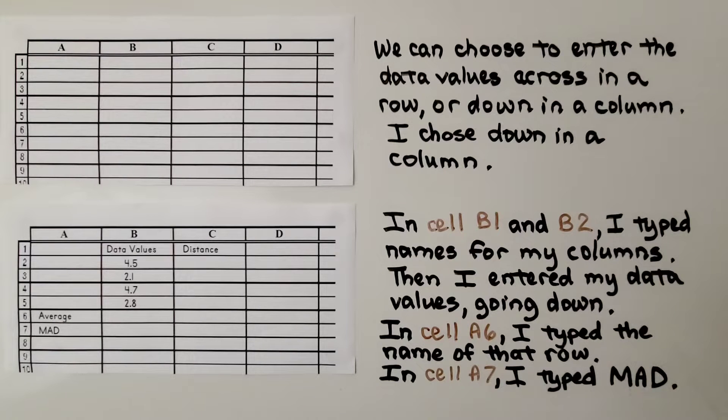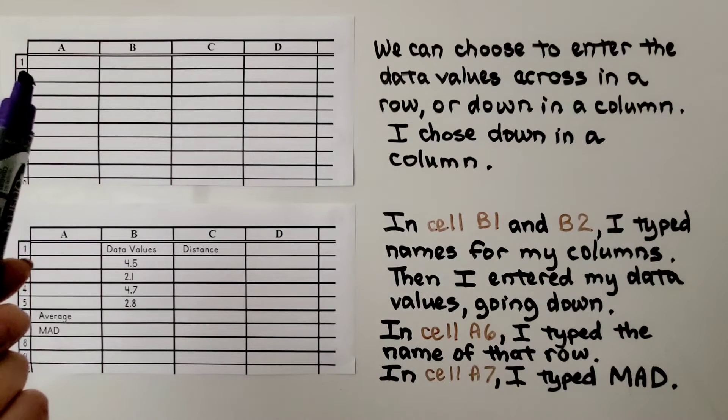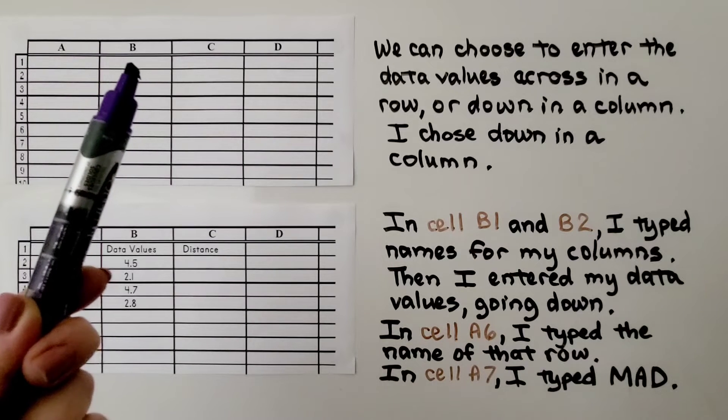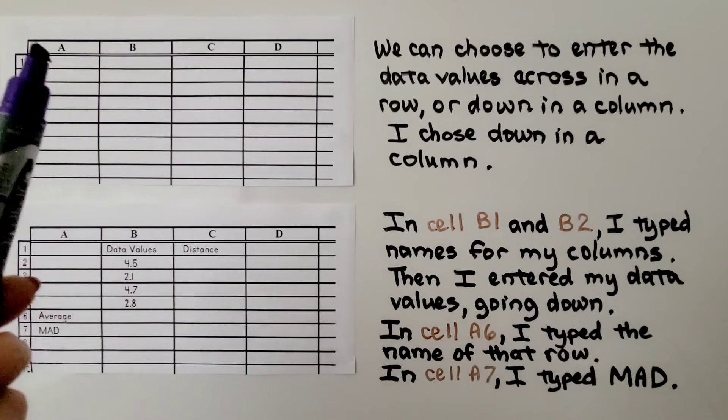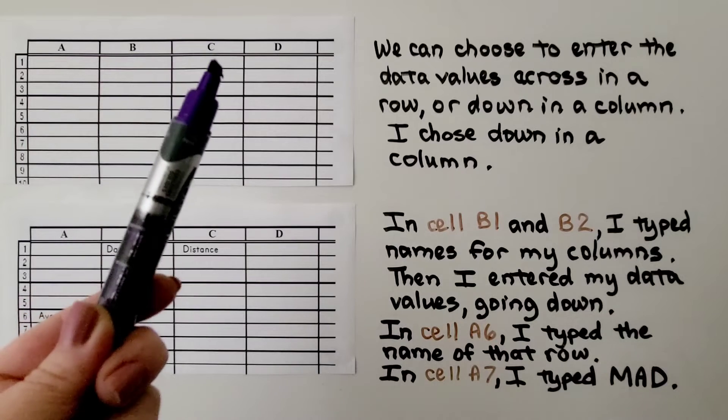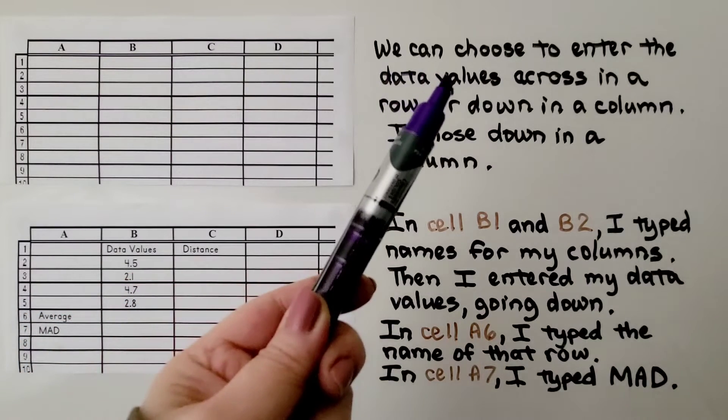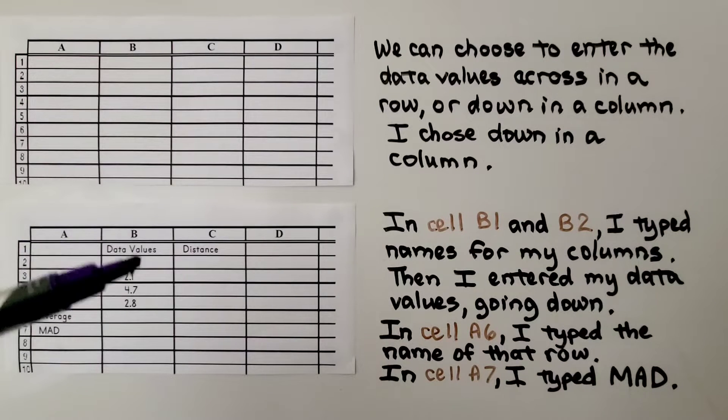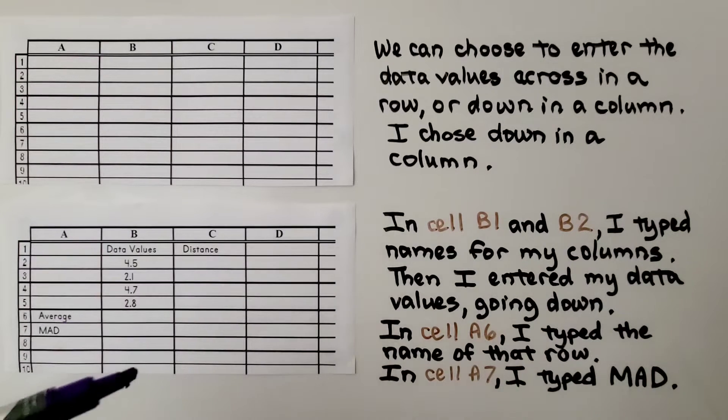So we're going to find the Mean Absolute Deviation for a set of data values. And we can choose to enter the data values across in a row or down in a column. I chose to go down in a column. So I'm going to use the B column to enter my data values.